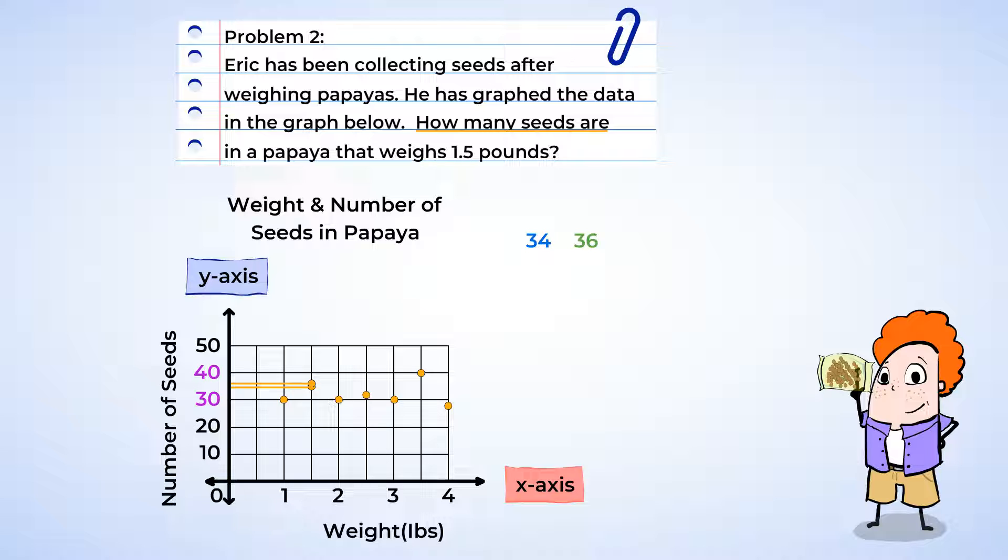And to find out how many seeds are in a typical papaya that weighs 1.5 pounds, you can find the average by adding and dividing like this. Okay, 34 and 36 equals 70 seeds. And we divide that by 2. And we get 35 seeds per papaya that weighs 1.5 pounds. Hey, great work on that problem.